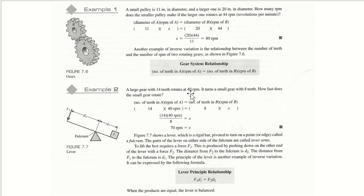A large gear with 14 teeth rotates at 40 RPM, turns a small gear with 8 teeth. How fast does the small gear rotate? And again, the calculation here comes down to 70 RPM.